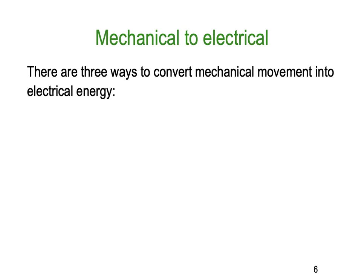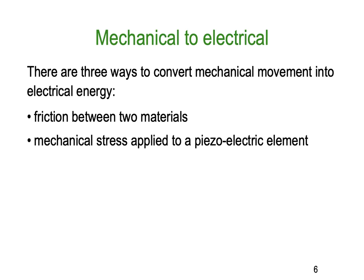So mechanical to electrical first. There are three ways to convert mechanical movement into electrical energy. The first is friction between two materials. I'm sure you've all had a party balloon — you rub the balloon on a synthetic shirt and you can make your hair stand on end or pick up small pieces of paper using electrostatic attraction. That is friction — you're literally rubbing electrons off your shirt onto the rubber of the balloon.